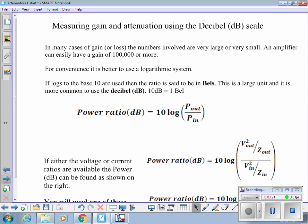For power ratio, the power ratio in dB is equal to 10 times the log of P_out over P_in.